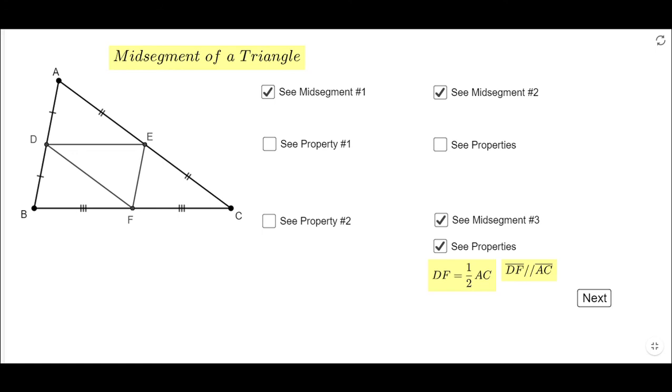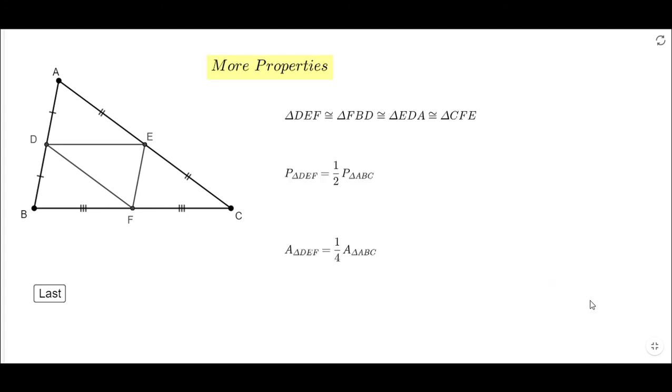And you notice now we have four triangles here. And let me unclick this and move to the next slide. These four triangles are all the same. They are congruent triangles.